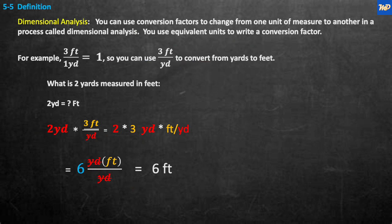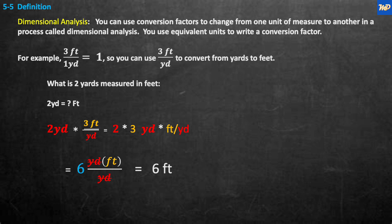Definition: Dimensional Analysis. You can use conversion factors to change from one unit of measure to another in a process called dimensional analysis. You use equivalent units to write a conversion factor. For example, three feet divided by one yard — or three feet per yard — is equal to one. And why is it equal to one? Because three feet equals one yard, so you can replace one yard with three feet. So three feet over three feet is one, meaning three feet over one yard is also equal to one.